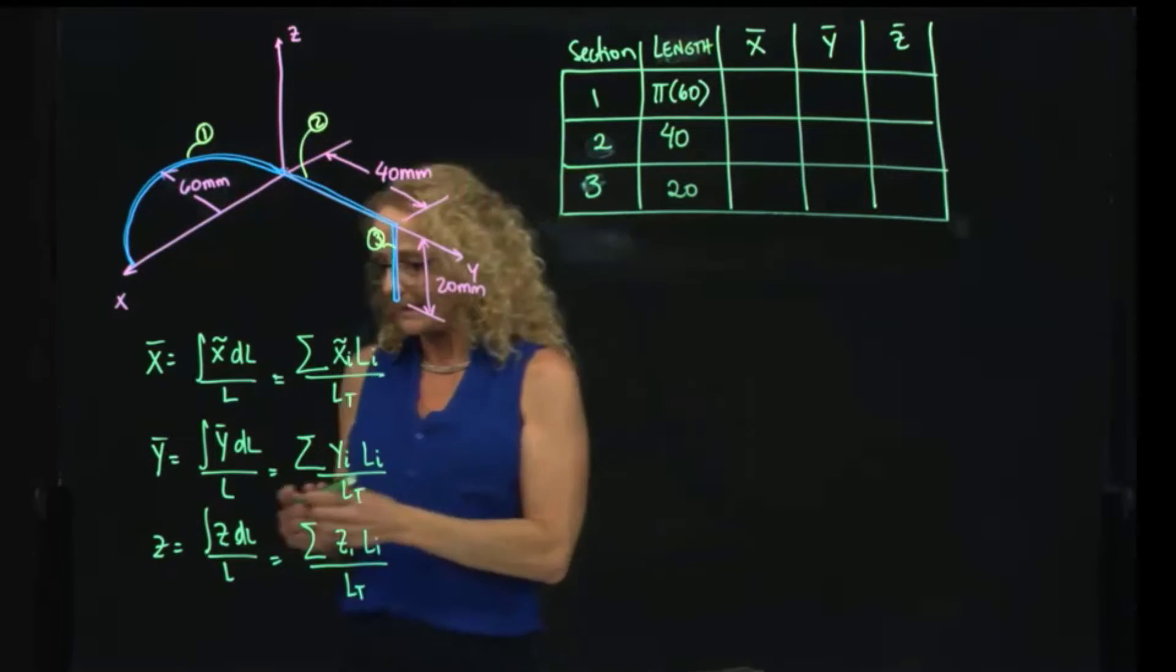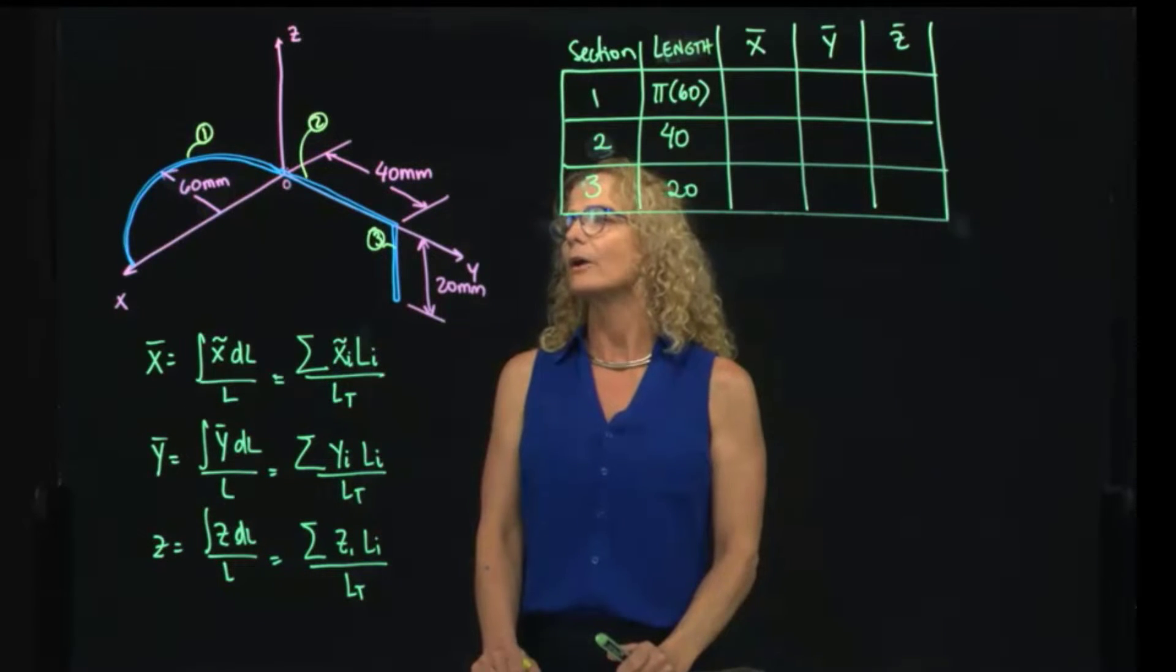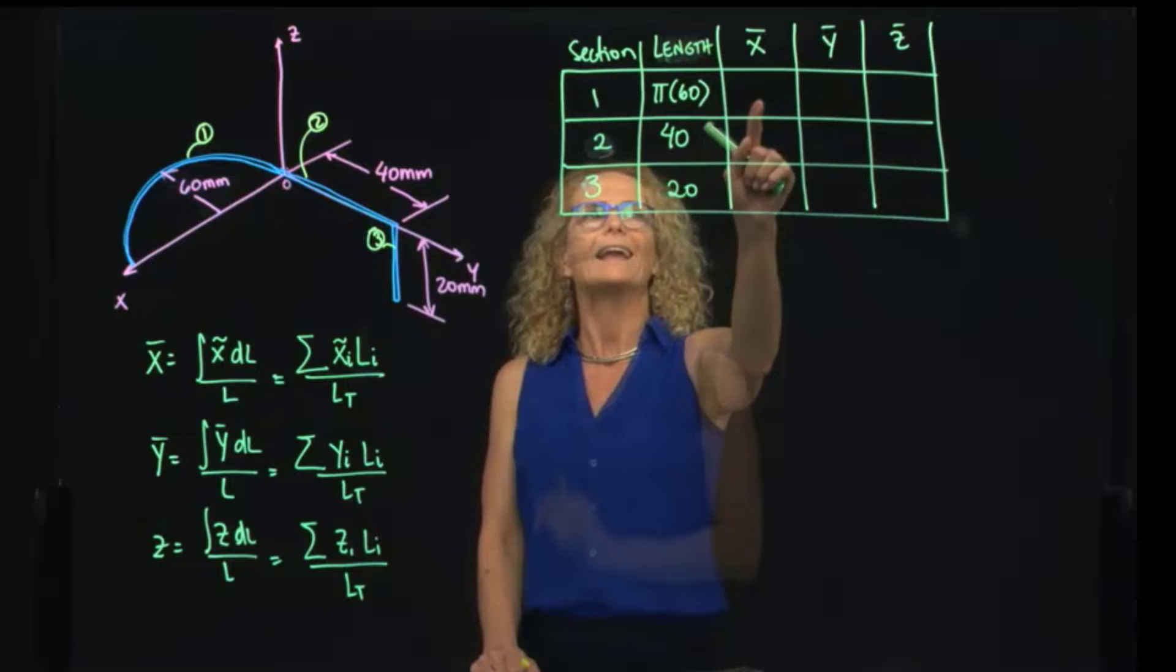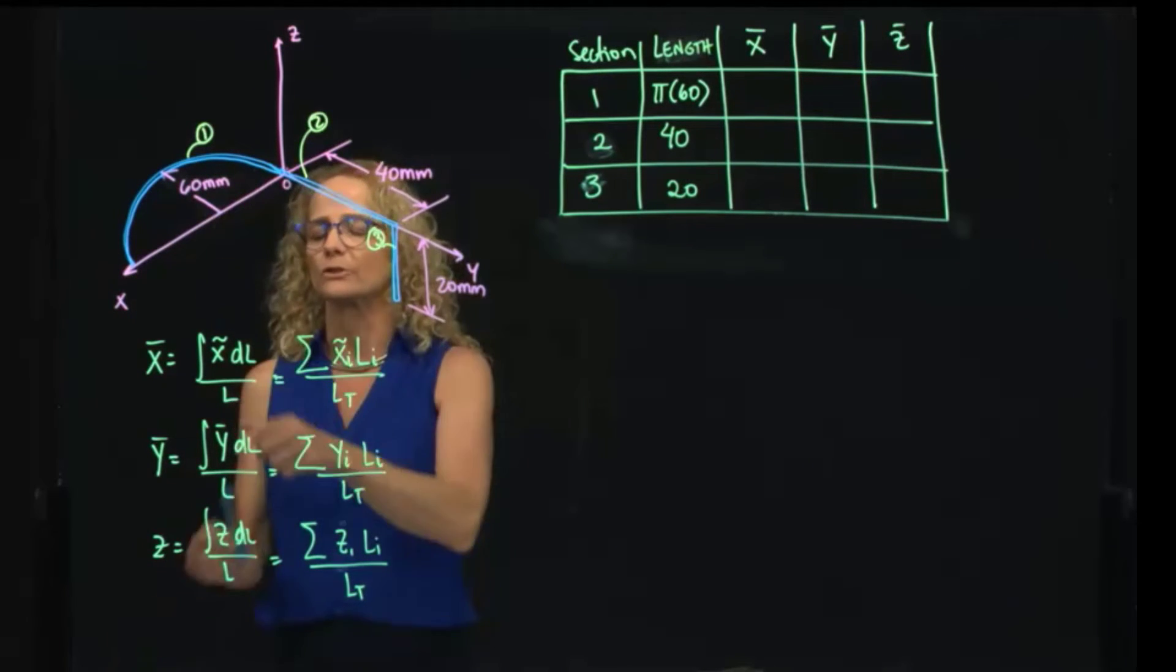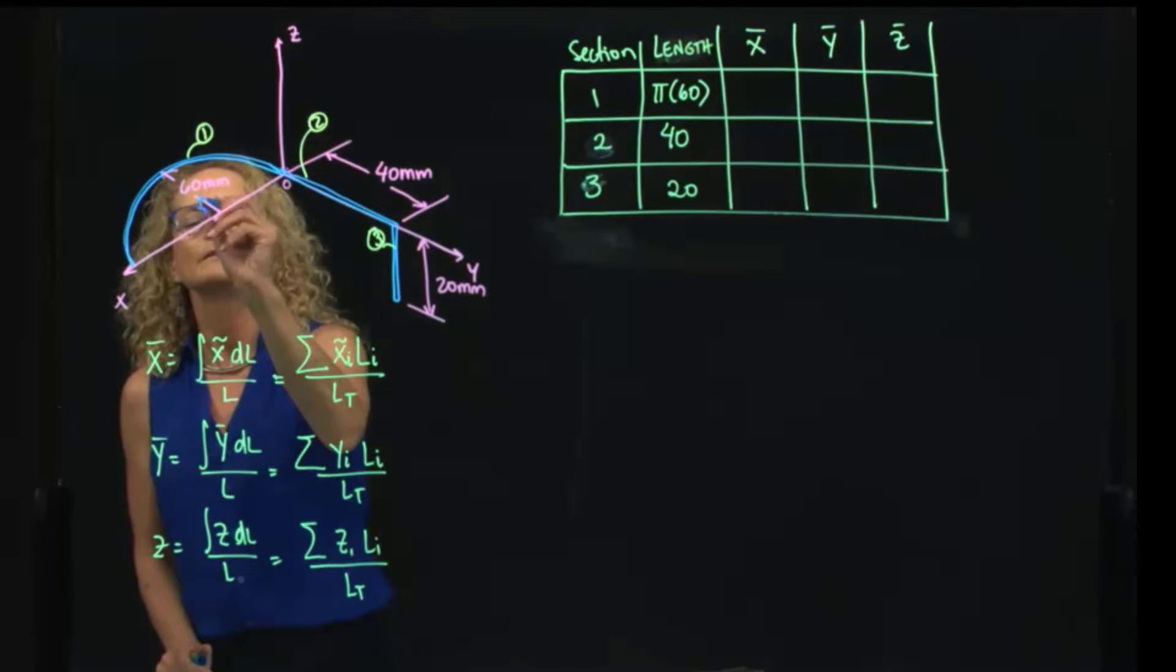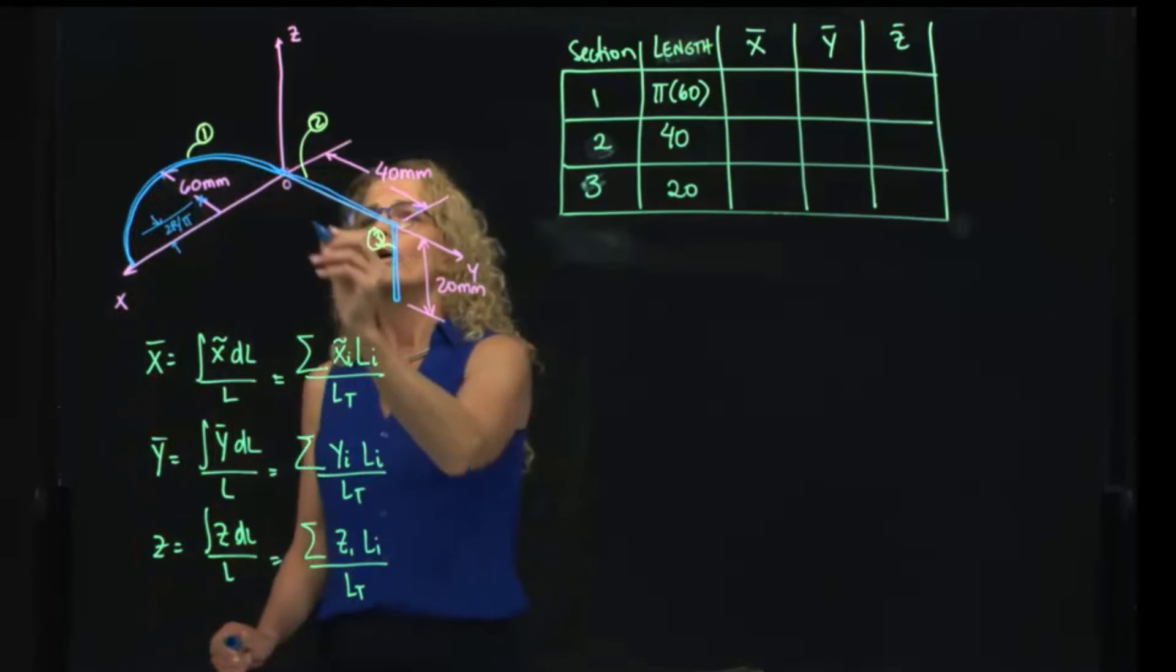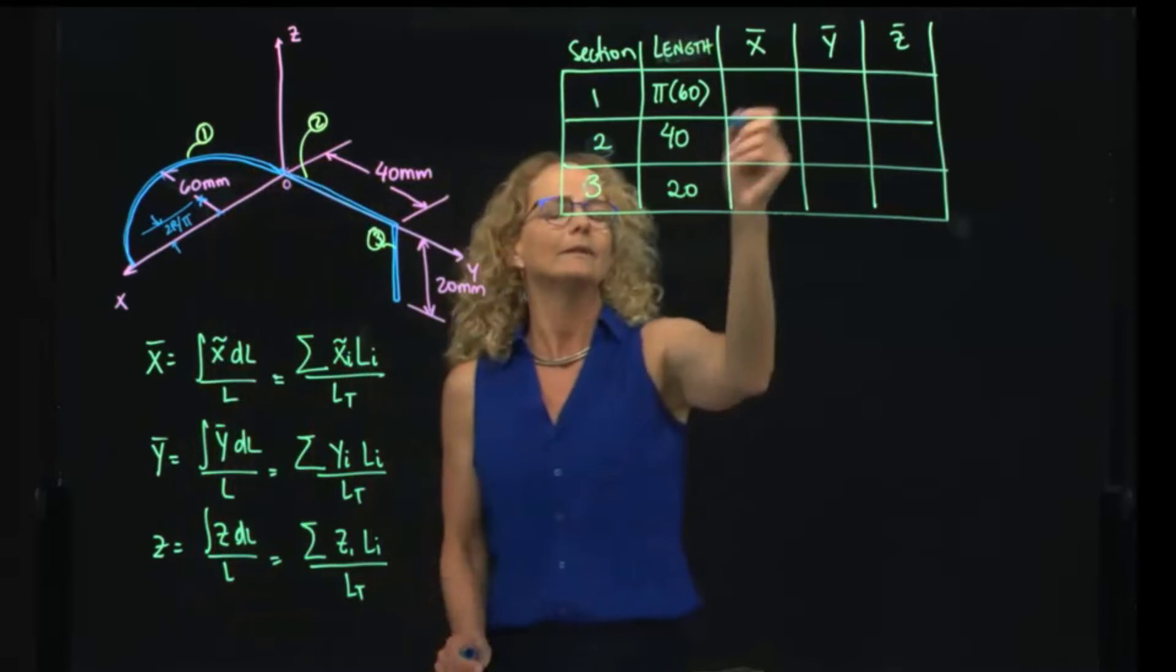If our origin of our coordinate system is located right there, where is the x for my circular first section? It's right here. We know that this is the centroid, and as you recall from the tables, this distance is 2r over pi. So in the x direction will be the radius, will be 60. In the y direction will be negative, that's 2r, 60 over pi.